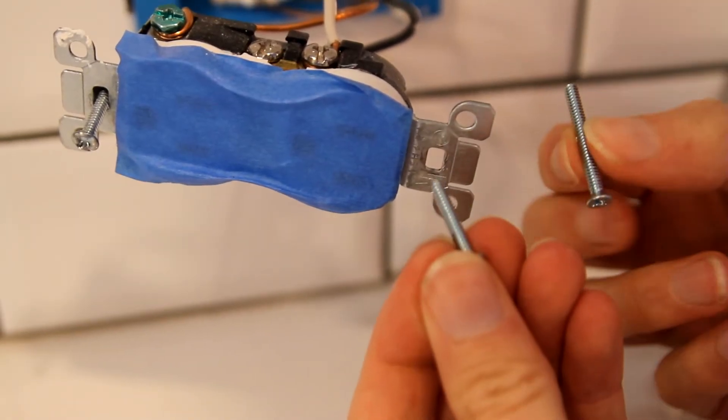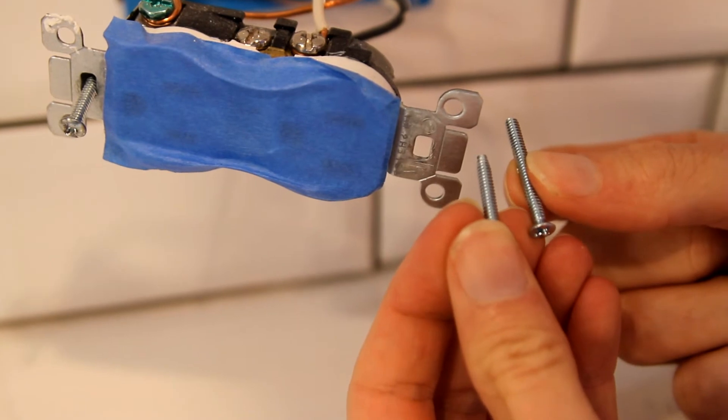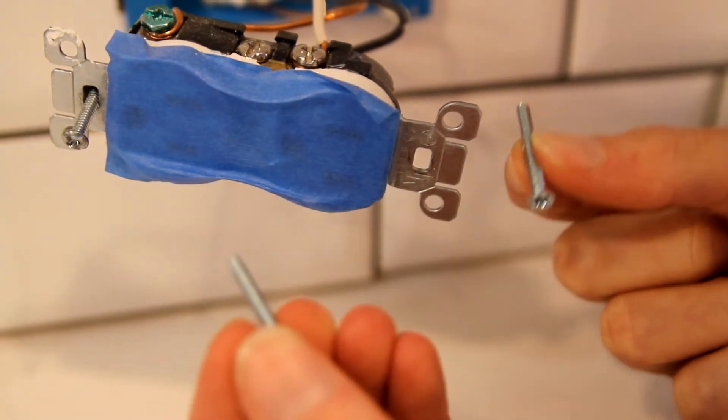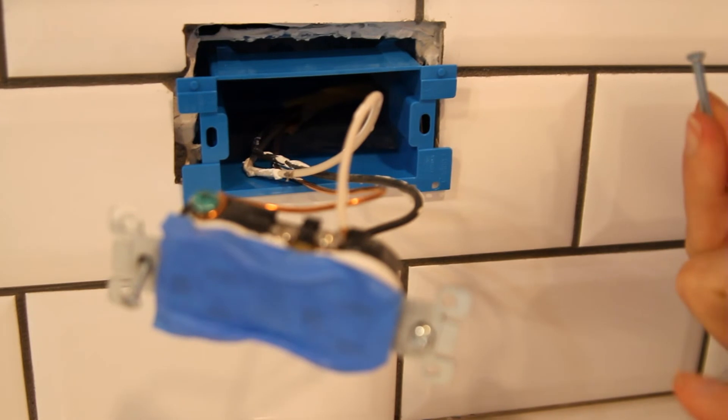So this is the original screw that came with the outlet, and you'll see these extender kits come with a longer screw and that helps you to cover the longer gap and it screws into the original box.